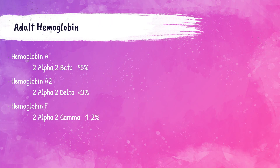For adults, there are three normal hemoglobin types. Hemoglobin A, or A1, is composed of two Alpha and two Beta chains and comprises 95% of all the hemoglobin in the adult human body. Hemoglobin A2 is composed of two Alpha and two Delta chains and comprises less than 3%. Lastly, hemoglobin F has two Alpha and two Gamma chains and accounts for about 1% to 2% of the total hemoglobin in the adult patient.